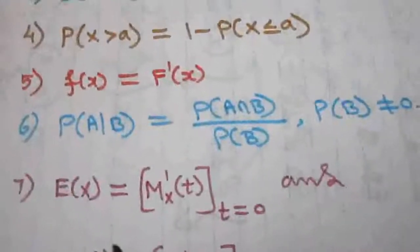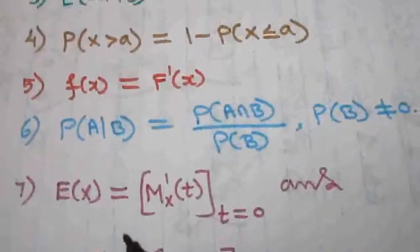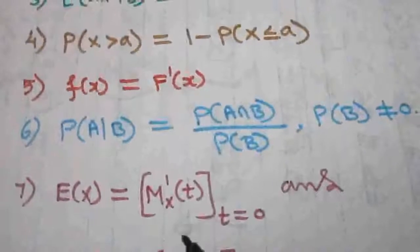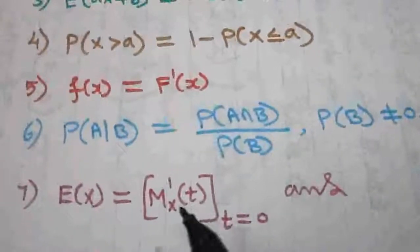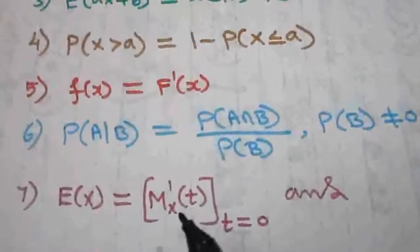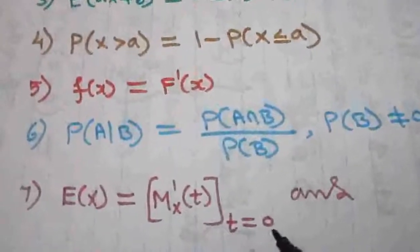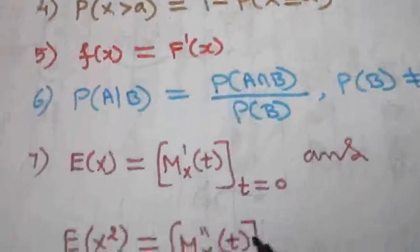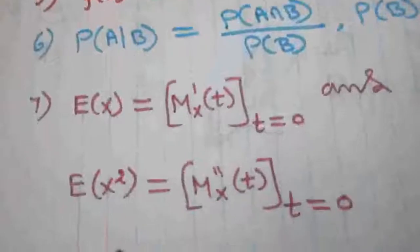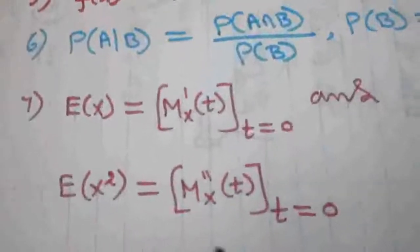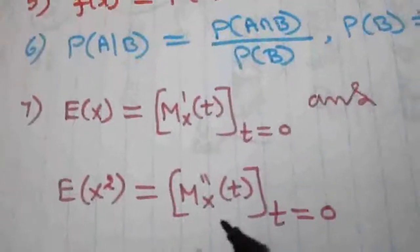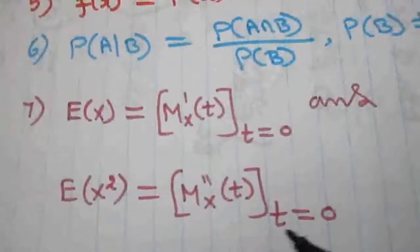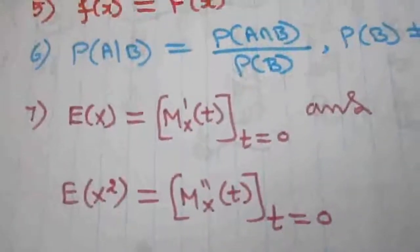The expectation E(x) can be written as the first derivative of the moment generating function evaluated at t = 0. E(x²) is the second derivative of the moment generating function evaluated at t = 0.